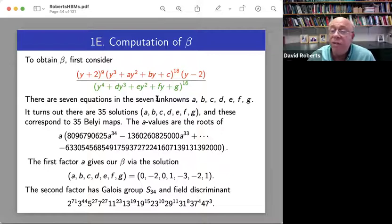So the first factor, just the A, gives our particular beta. And the second factor is pretty bad. It's Galois group is S34 and its discriminant, well, people used to get excited about this. It's field discriminant is divisible by only small primes.